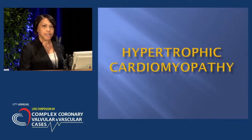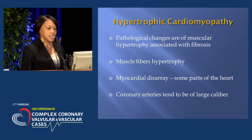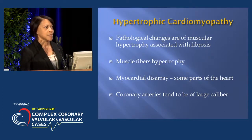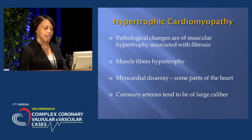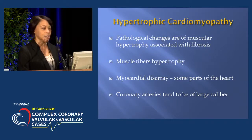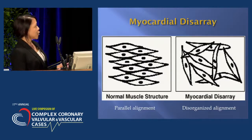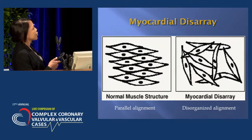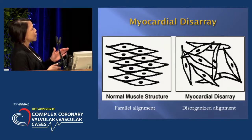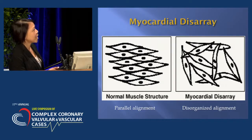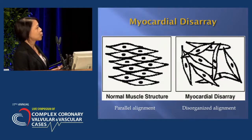For the purpose of this talk, we'll be discussing hypertrophic cardiomyopathy. The pathological changes are muscular hypertrophy associated with fibrosis, the muscle fibers hypertrophy or enlarge, and there's myocardial disarray in some parts of the heart. The coronary arteries tend to be of larger caliber as well. In this picture, normal muscle structure shows fibers that are orderly and organized, whereas with myocardial disarray, the fibers are all over the place with no organization.